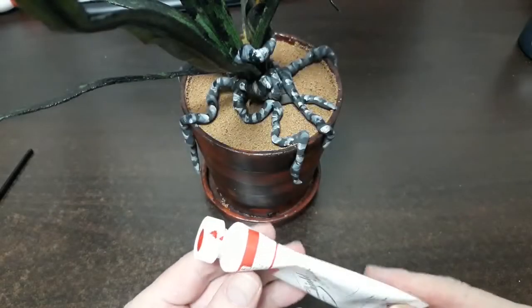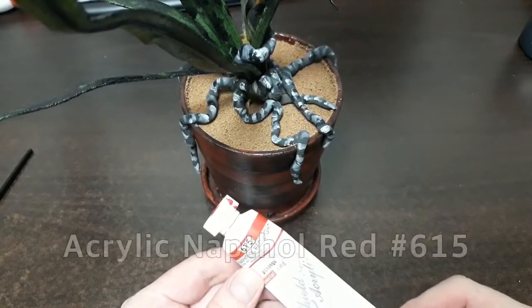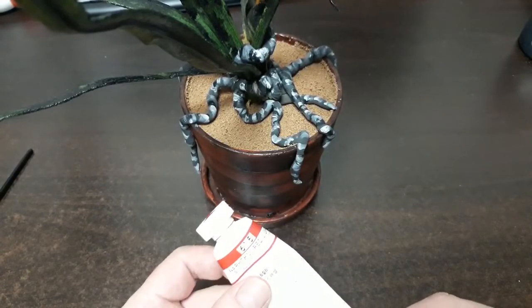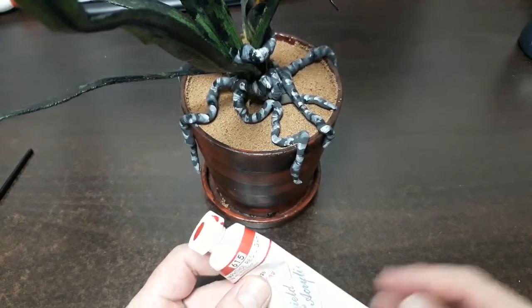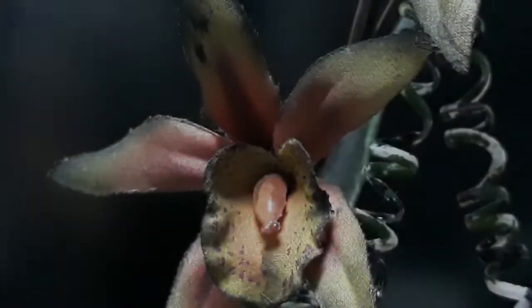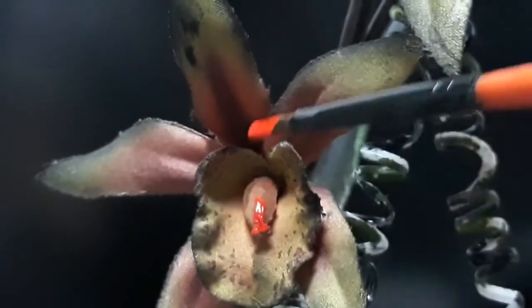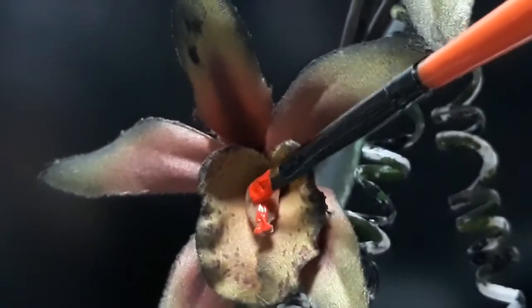And going into the home stretch I'm using a Napthol red light number 615 to do the interior of the flower stamens. So now let's create some detailing and make sure the eye goes right towards this area of the flower.